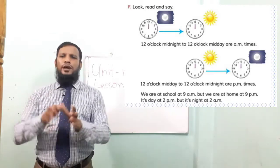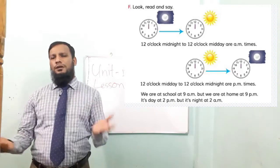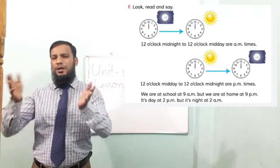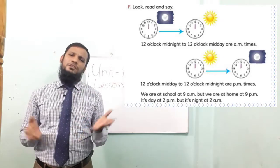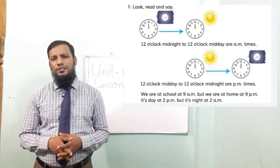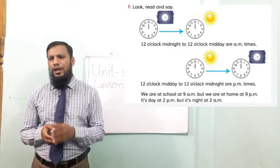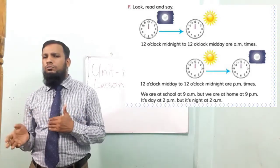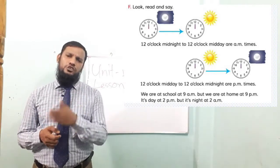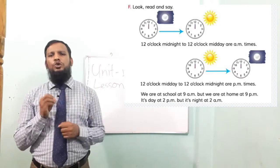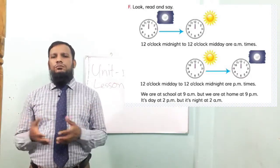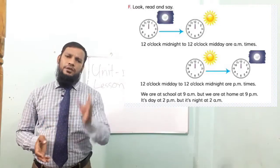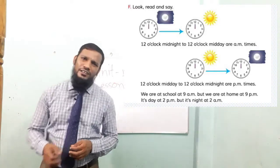But we are at home at 9 p.m., because we don't remain at school at night — at night we remain at home. But in the morning, in daytime, we may remain at school. That's why 9 a.m. is a time when we remain at school, but 9 p.m. is nighttime. If it's 2 a.m. it's night, but if it's 2 p.m. it's daytime.